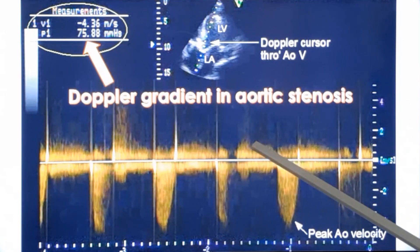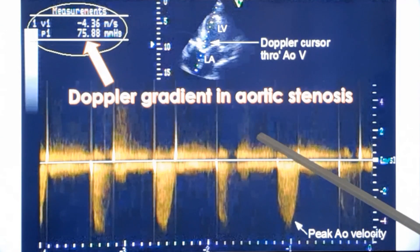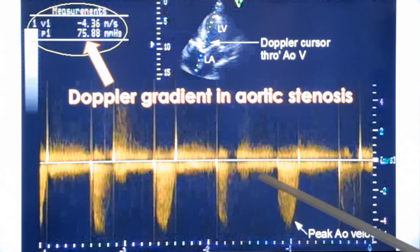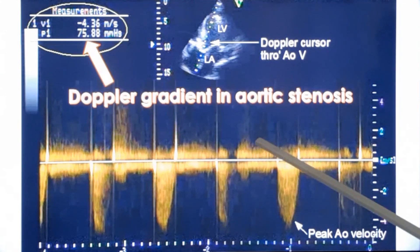And when there is a significant gradient, it is aortic stenosis. This is from an original case recording, while the previous one was a diagram.